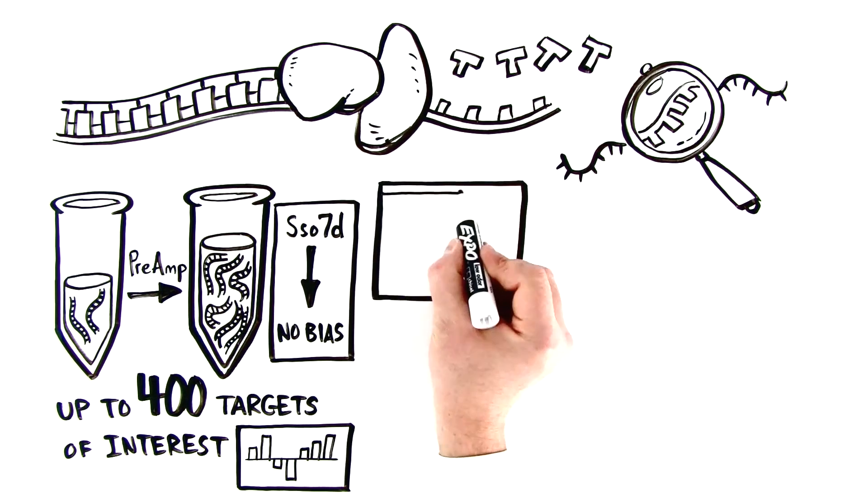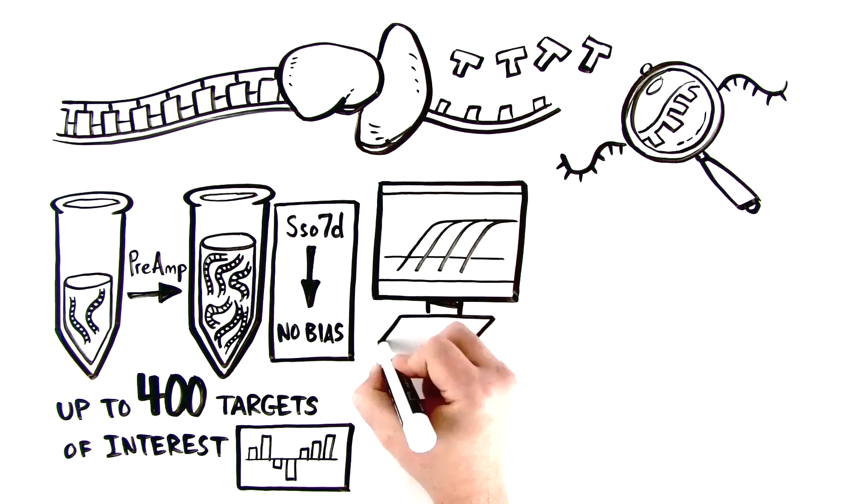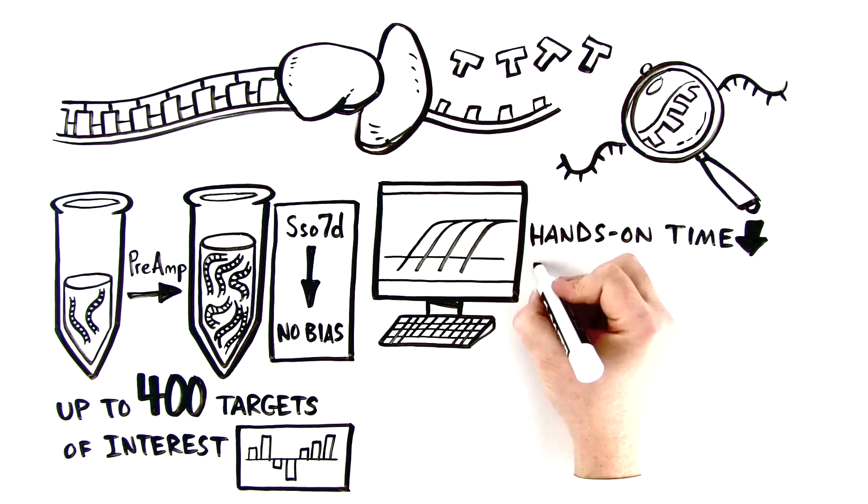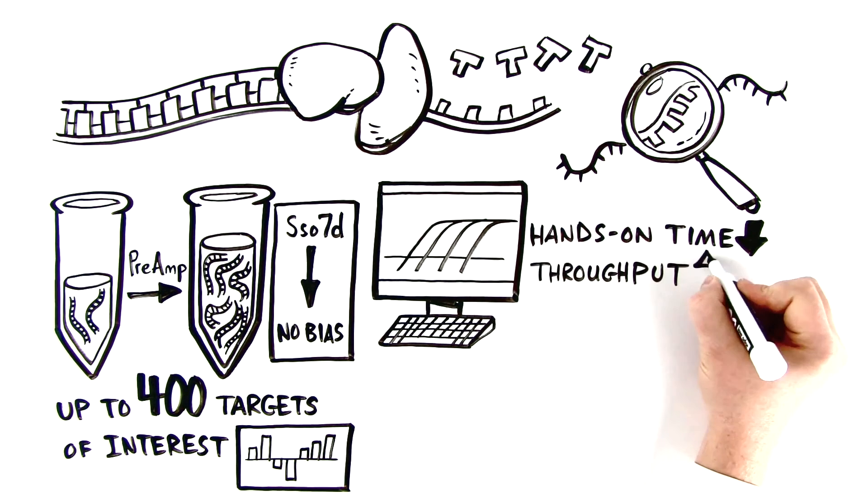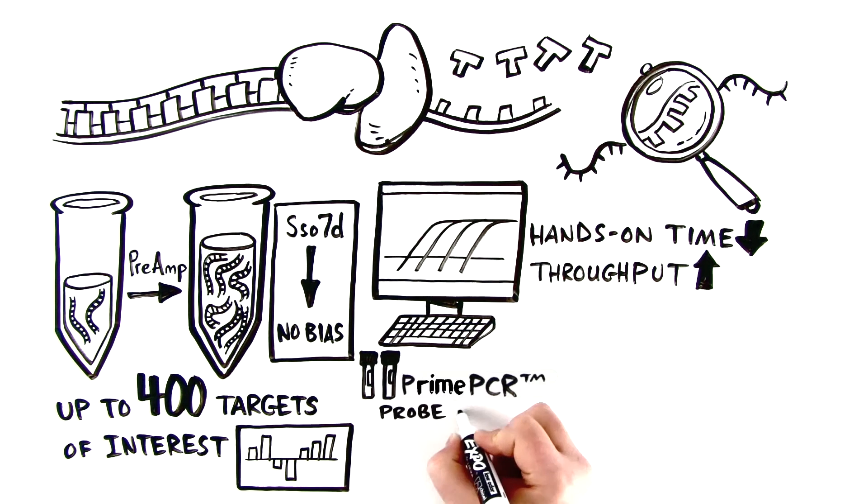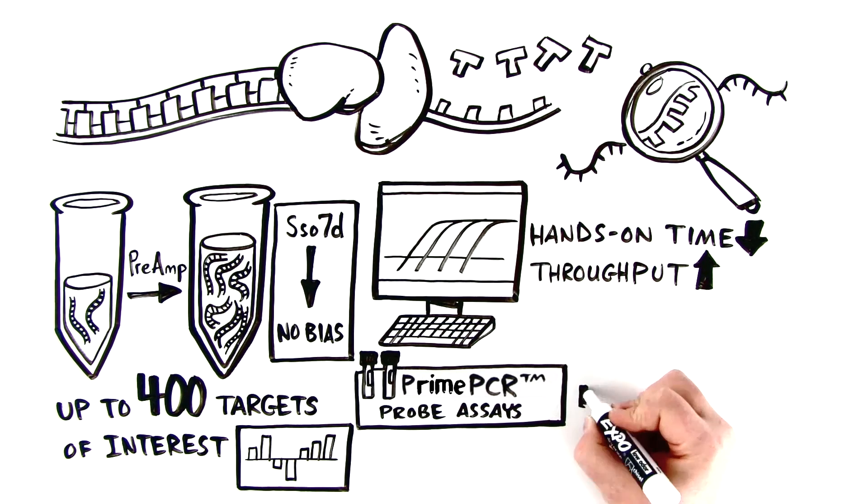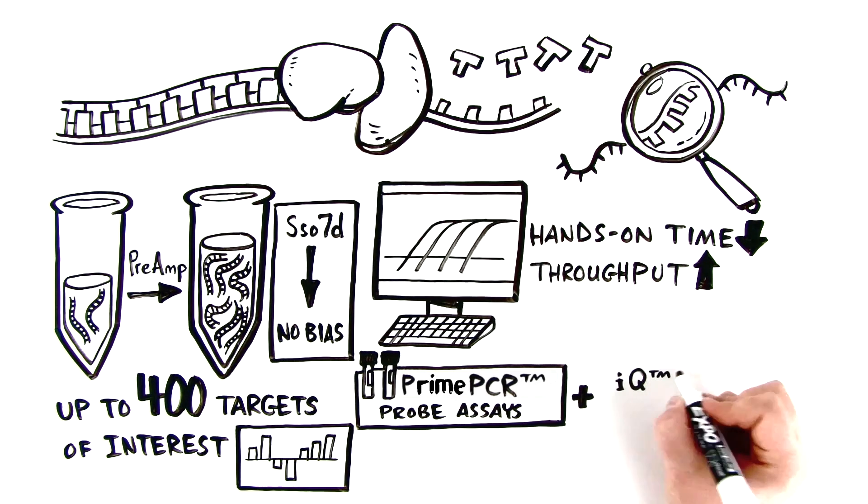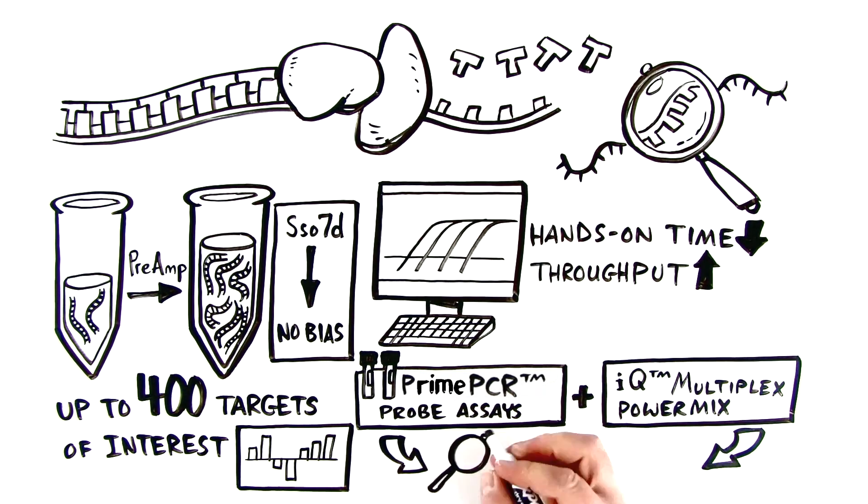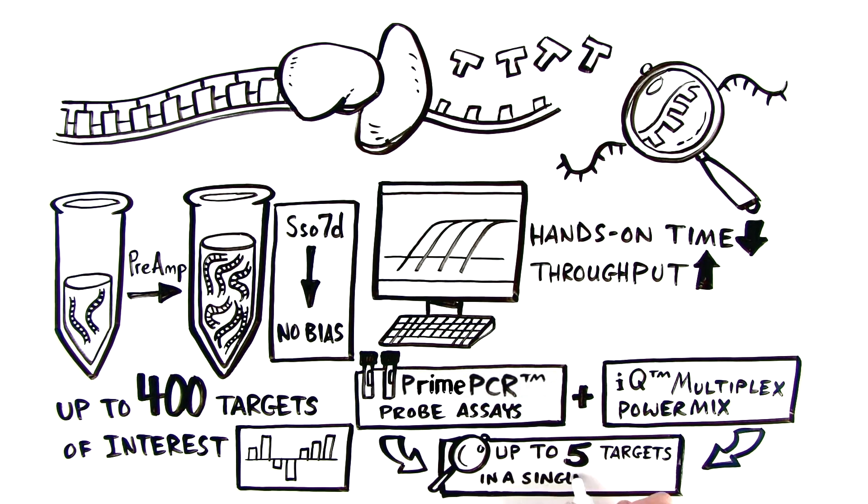Finally, real-time PCR is performed using a multiplex approach, minimizing hands-on time during setup while simultaneously increasing throughput. And while normally it is a daunting task to design a multiplex gene expression assay, the use of PrimePCR probe assays with iQ Multiplex Powermix provides an effective off-the-shelf solution for analyzing up to four or five targets in a single reaction.